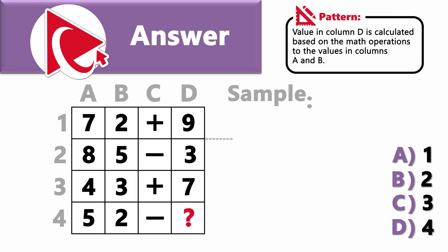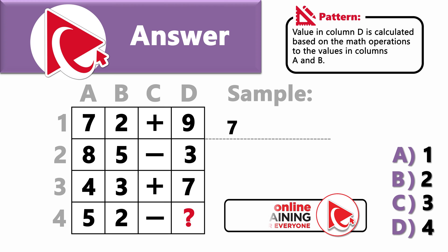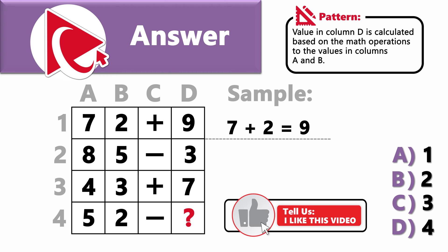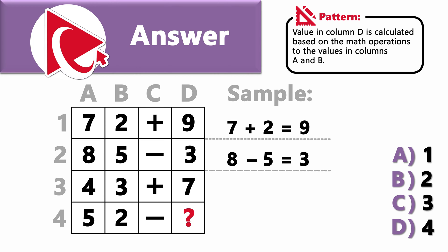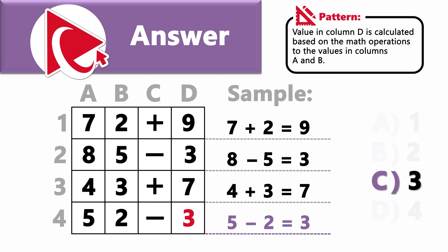To calculate the values in row 1, we need to add 7 plus 2, and the result would be equal to 9. Value for row 2 is calculated as 8 minus 5 and equals 3. For row 3, 4 plus 3 equals 7. Let's do the math now for the missing value. 5 minus 2 equals 3. So the correct answer here is choice C, 3.